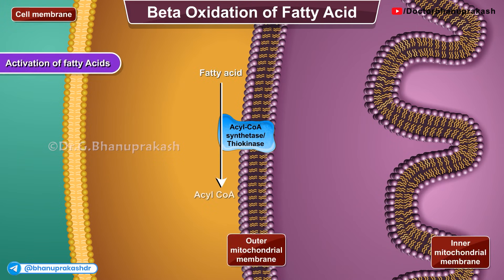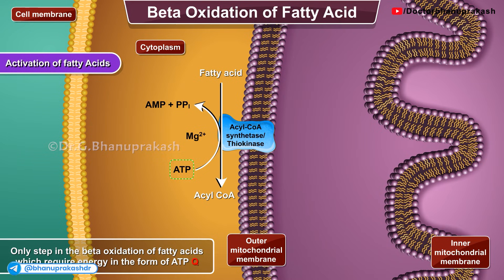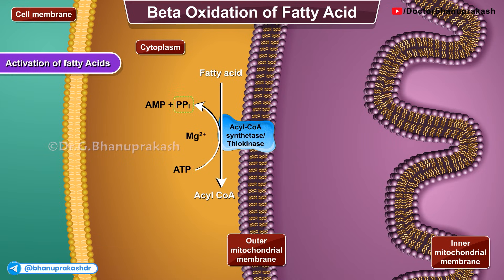Step 1: Activation of fatty acids. The site where it takes place is the cytoplasm. The enzyme used is acyl-CoA synthetase, also known as thiokinase, which is present in the outer mitochondrial membrane. This is the only step in the beta oxidation of fatty acids which requires energy in the form of ATP. Two inorganic phosphates are used in this reaction. Here, ATP gets converted to AMP. When fatty acid is converted to acyl-CoA, ATP is converted to AMP plus PPi with the help of magnesium ions.